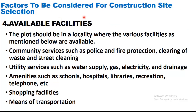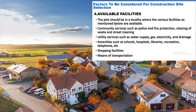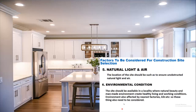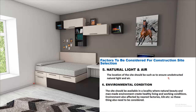The fourth factor is available facilities. The plot should be in a locality where various facilities are available, such as community services like police and fire protection, clearing of waste and street cleaning; utility services such as water supply, gas, electricity, and drainage; amenities such as schools, hospitals, libraries, recreation, and telephones; shopping facilities; and means of transportation nearby. Additionally, the location of the site should ensure unobstructed natural light and air.